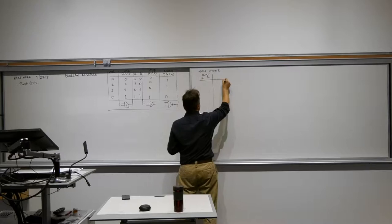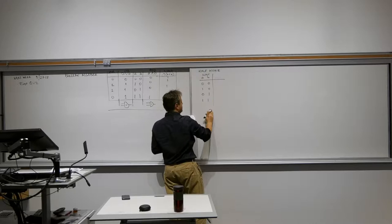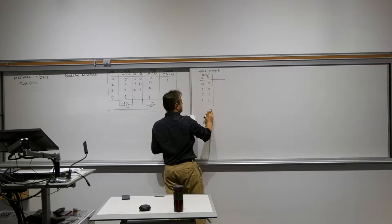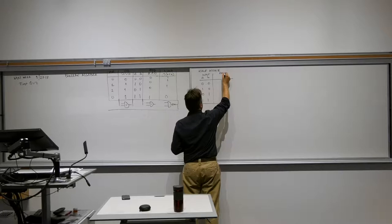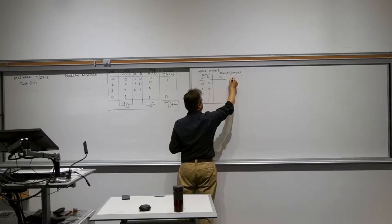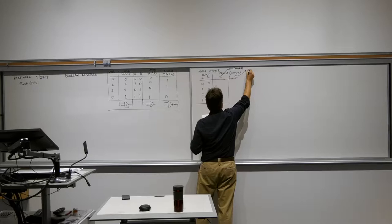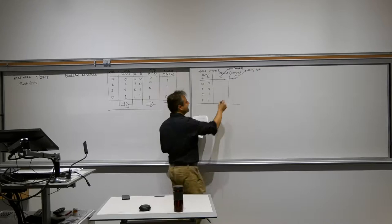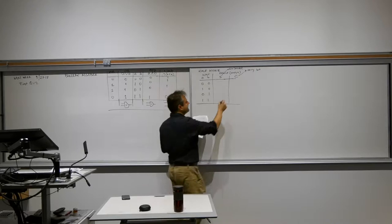Every time we write a truth table, we write all possibilities. We have the result — sometimes called the output — and the result consists of two bits: the sum bit and the carry bit. The sum is the printed bit and the carry goes to the next column. This is the regular binary addition we've been looking at.